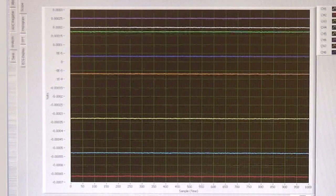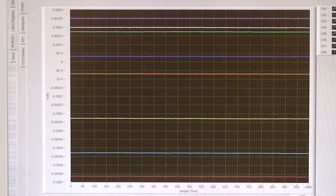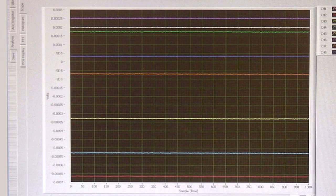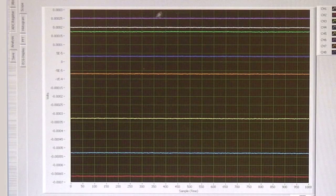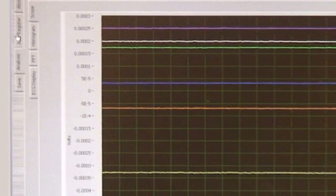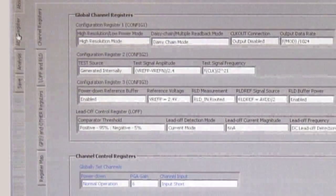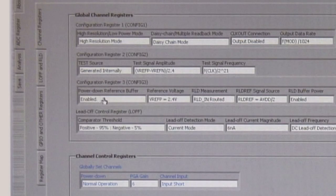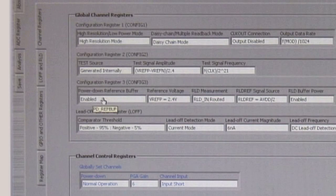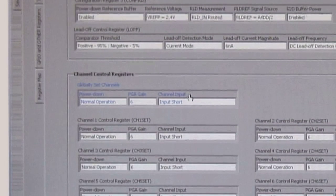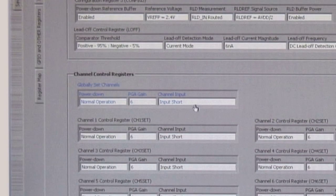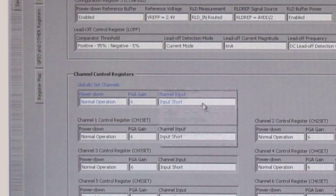A very useful feature for testing that the EVM is connected correctly and communicating with the computer is the integrated test mode input. Change to the ADC register tab on the left hand side of the interface. All channel inputs can be changed using the controls under the globally set channels heading here. Under the channel inputs select test signal.